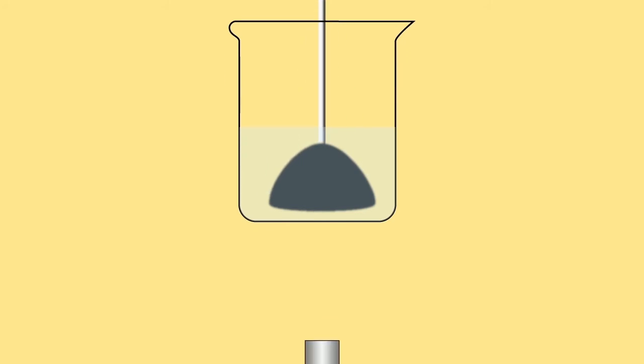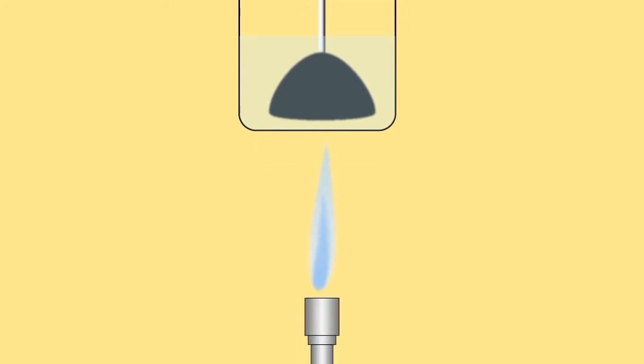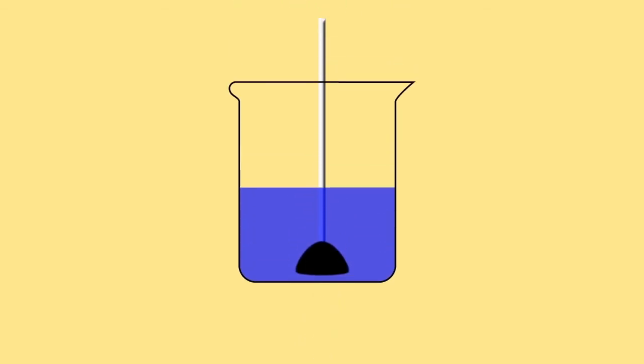But if you heat this over a roaring Bunsen burner flame while stirring, it turns bright blue. This is how you know that the reaction is complete. Let's remove it from the heat and let cool while we discuss the chemistry of this reaction.